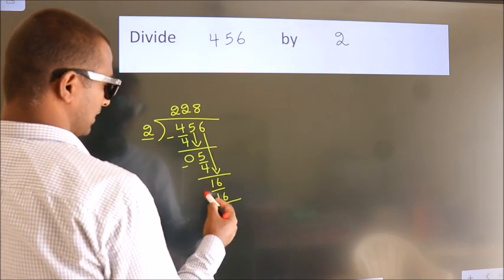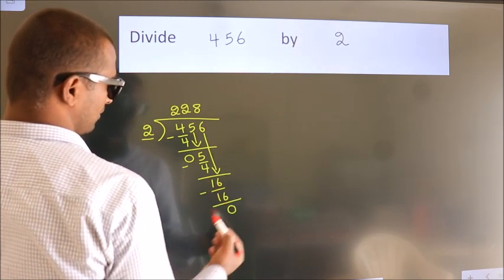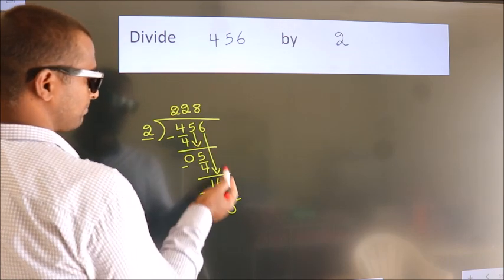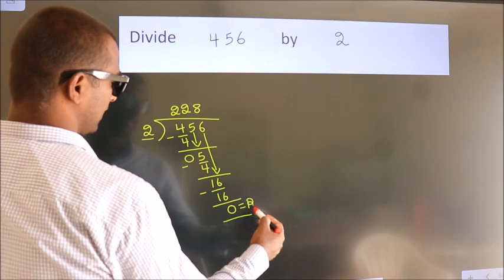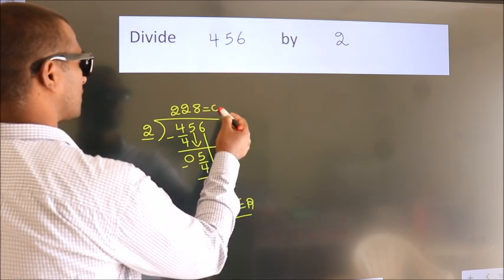Now we subtract. We get 0. No more numbers to bring it down, so we stop here. This is our remainder. This is our quotient.